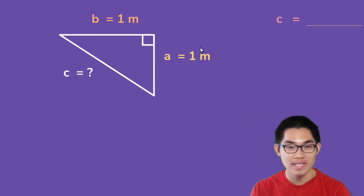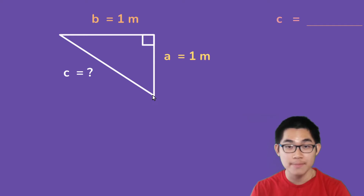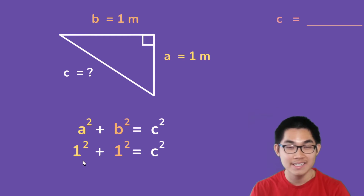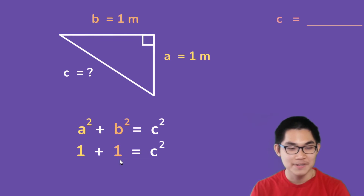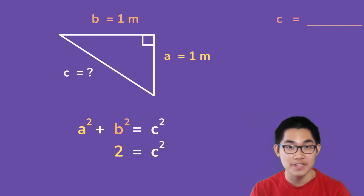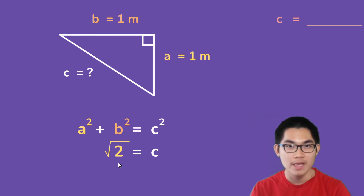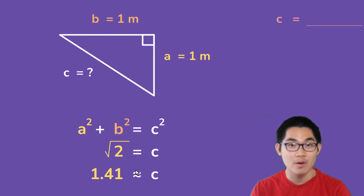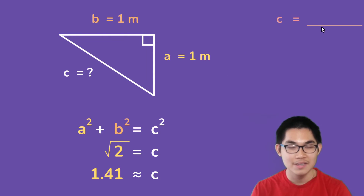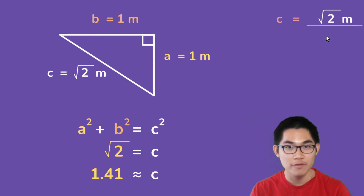So in this triangle, we know that a is 1 meter and b is also 1 meter. What is c? We can use the same formula: a squared plus b squared is equal to c squared. So a is 1 and b is also 1. So 1 squared is 1, and over here it's the same thing, it is 1. So 1 plus 1 gives you 2. And to solve for c, we need to take the square root of both sides of the equation. We're left with c is equal to the square root of 2. And if you put this in a calculator, it gives you about 1.41 meters. And that is our answer. So the length c here is the square root of 2 meters, or approximately 1.41 meters.